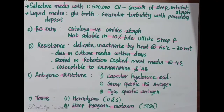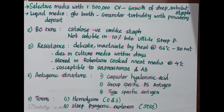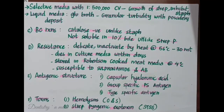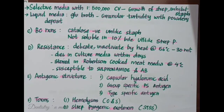Streptococcal pyogenic exotoxin (SPE) is responsible for Streptococcal toxic shock syndrome and scarlet fever. SPE is also called erythrogenic toxin and is only produced by lysogenic strains of group A Streptococcus. This toxin is responsible for the Dick test and Schultz-Charlton test. When the toxin is injected intradermally into the skin of a susceptible child, there will be a localized erythematous reaction called the Dick test. In scarlet fever, when homologous antitoxin is injected locally into the rash, blanching occurs, called the Schultz-Charlton reaction. These tests are now only of historical importance as scarlet fever is very rarely seen.